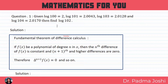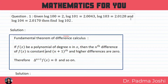Hello learners. In today's lecture, we are going to see questions on missing term. In this question, given log 100 is equal to 2, log 101 is 2.0043, log 103 is 2.0170, then we have to find log 102.